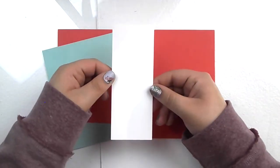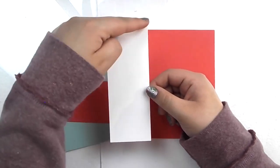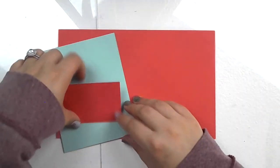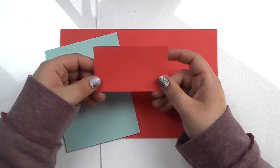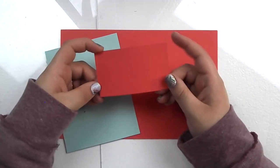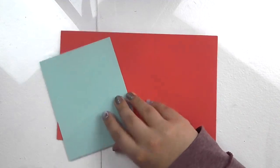I have a piece of whisper white here, which is cut at two inches by five and a quarter. Again, I just another scrap of, this is watermelon wonder.